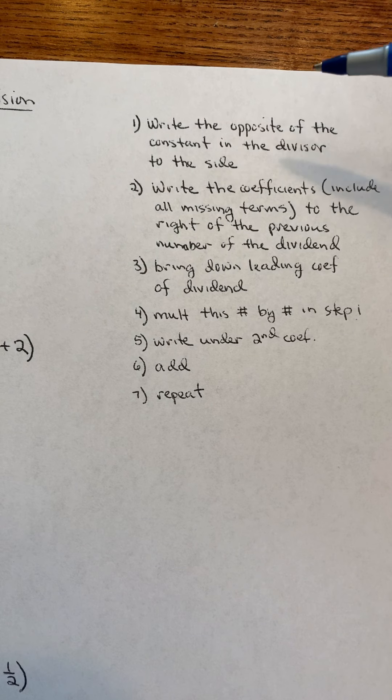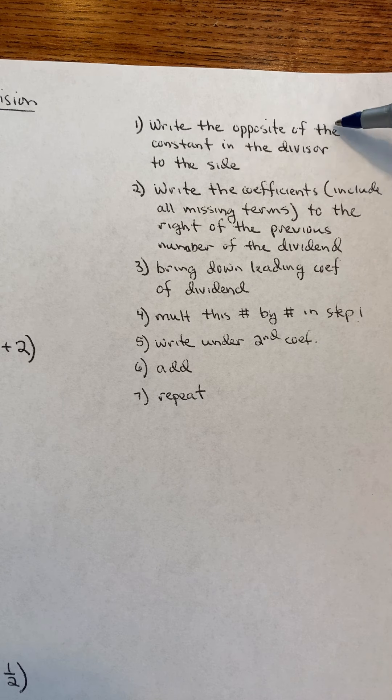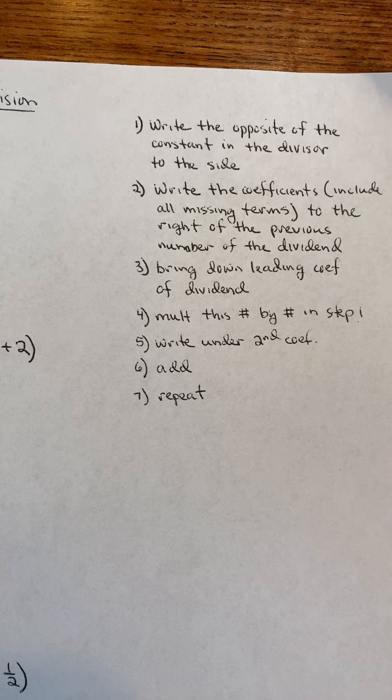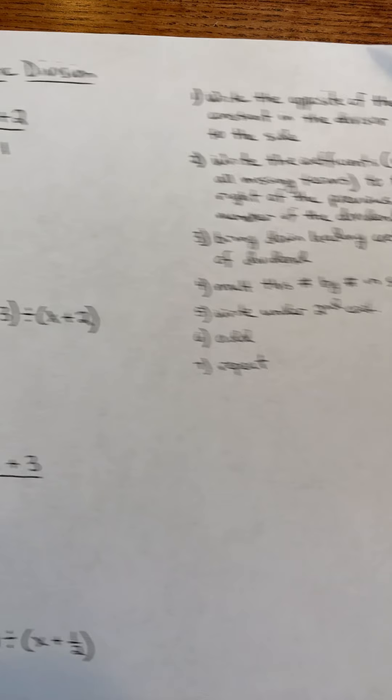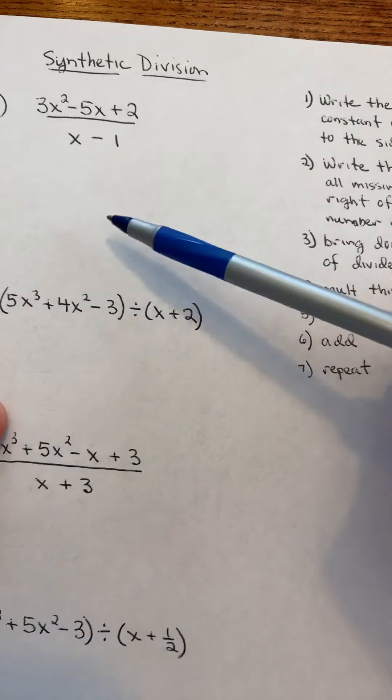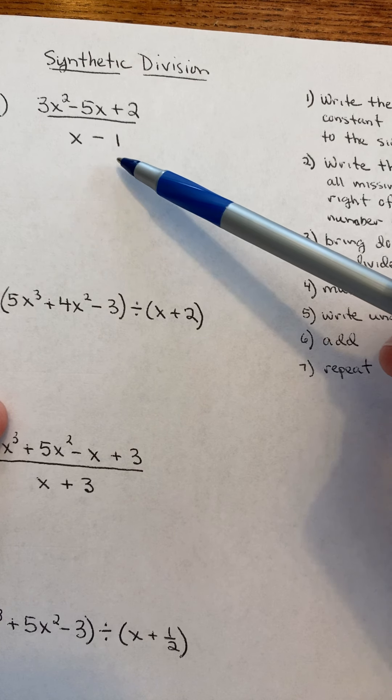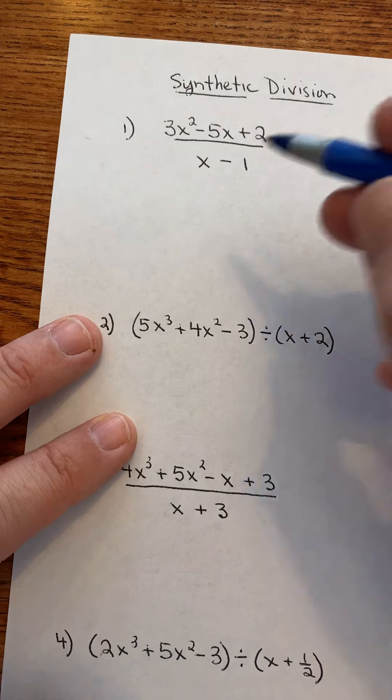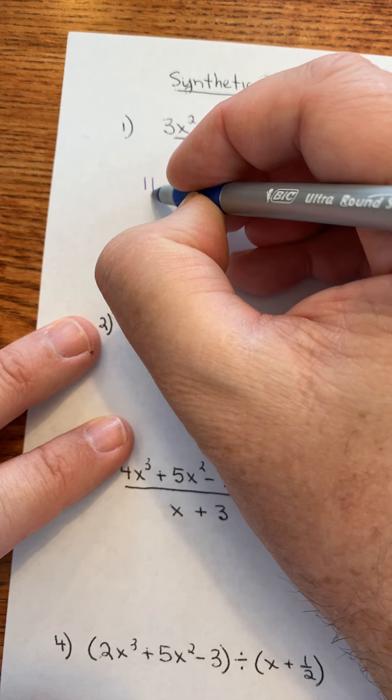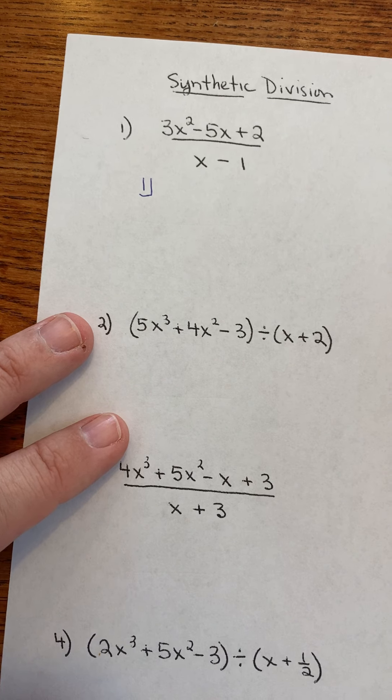All right, so step 1. Write the opposite of the constant in the divisor. Remember, the divisor is the thing that you're dividing into the top. So the opposite of the constant, in this case, the constant says minus 1, the opposite of that, I'm going to use a plus 1. I'm going to put that over here to the side, put a little box around it, sort of a box.